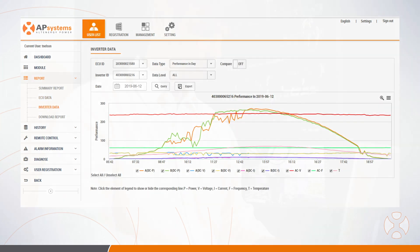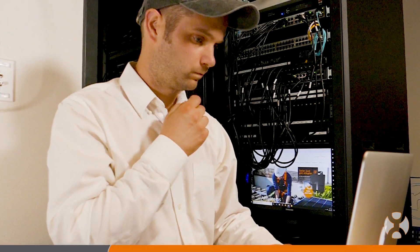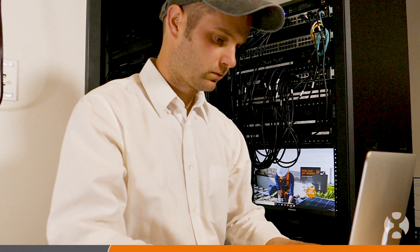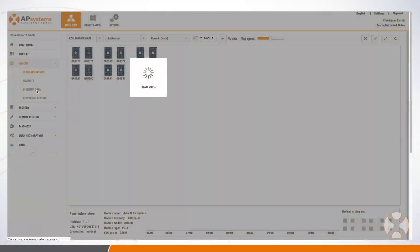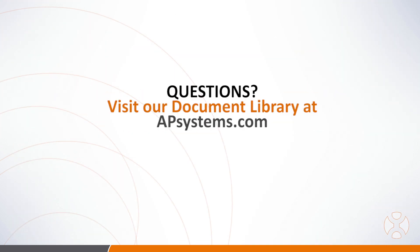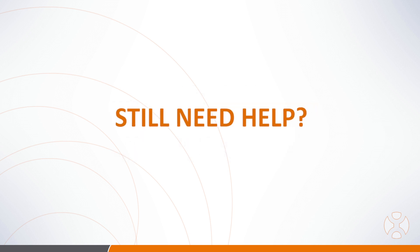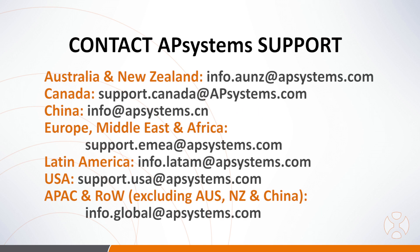As a general rule, if you're not sure what a particular setting or selection does, it's best to leave it alone until you understand its function. That way installers do not inadvertently change site settings or configurations which may adversely affect inverter performance. If you have any questions about these process steps, please see our document library at apsystems.com or our extensive installation video library on our YouTube channel at youtube.com/apsystemssolar. If you can't find the answer, contact AP Systems technical support at apsystems.com.